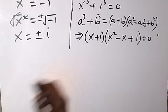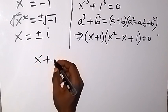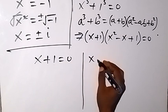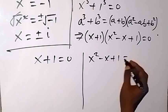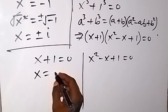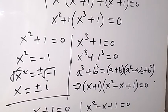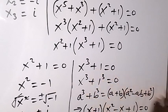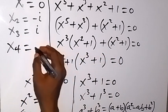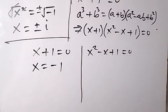From here we have two possible cases: x plus 1 equals 0, and x squared minus x plus 1 equals 0. From x plus 1 equals 0, taking plus 1 to the other side gives us x equals minus 1. This is the fourth solution, x₄ equals minus 1.